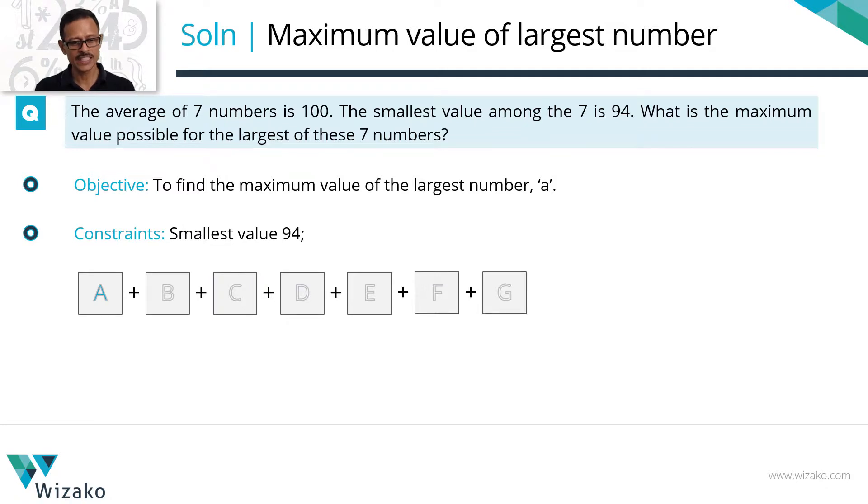Let's look at it. These are the 7 numbers A, B, C, D, E, F, G. The sum of these 7 numbers works out to 700. We realized this in the last slide.